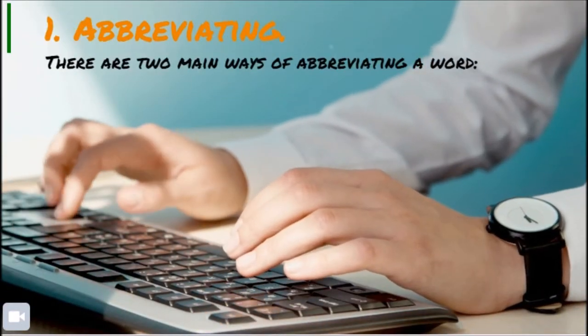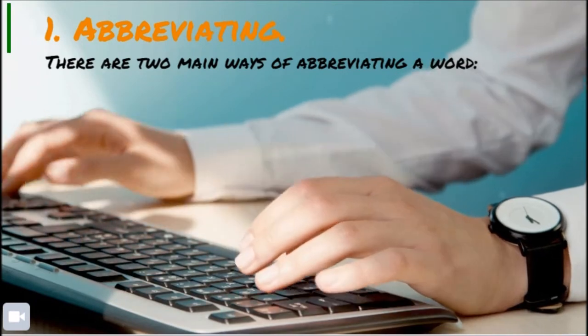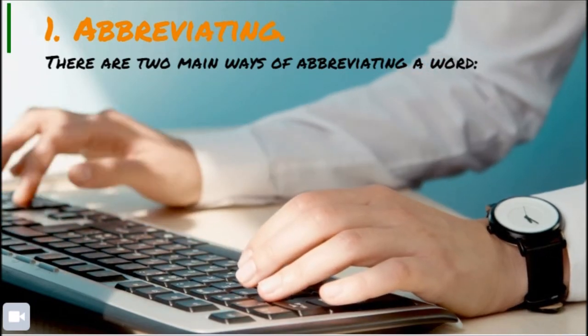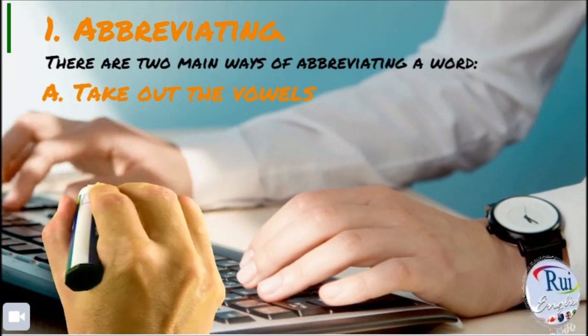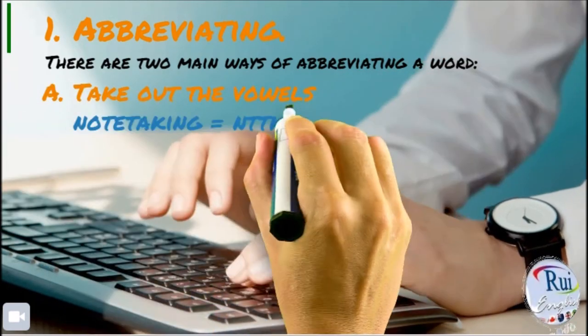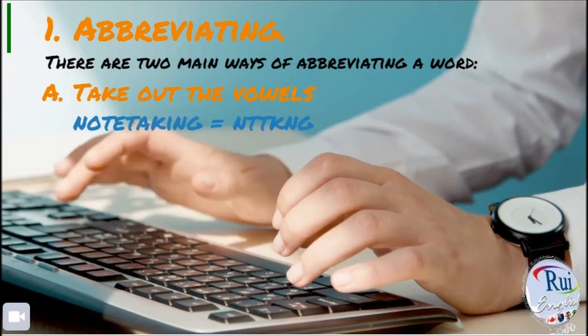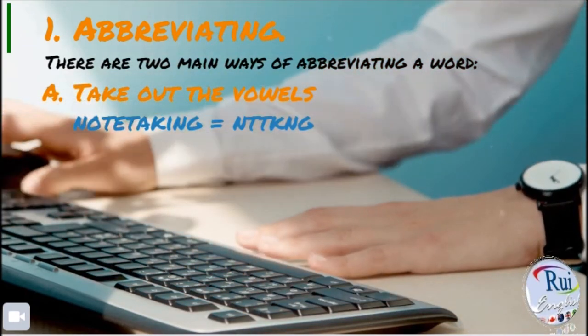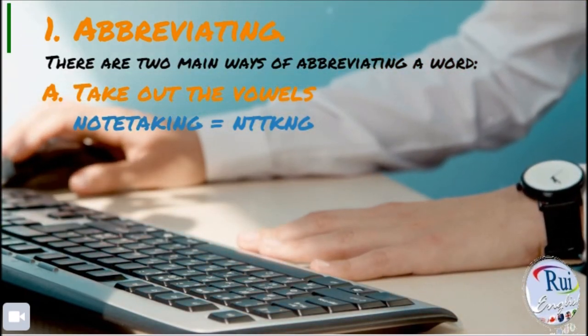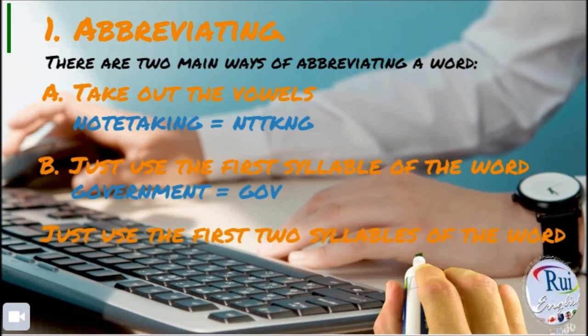1. Abbreviating. There are two main ways of abbreviating a word. You can use abbreviations by: 1. Taking out the vowels.